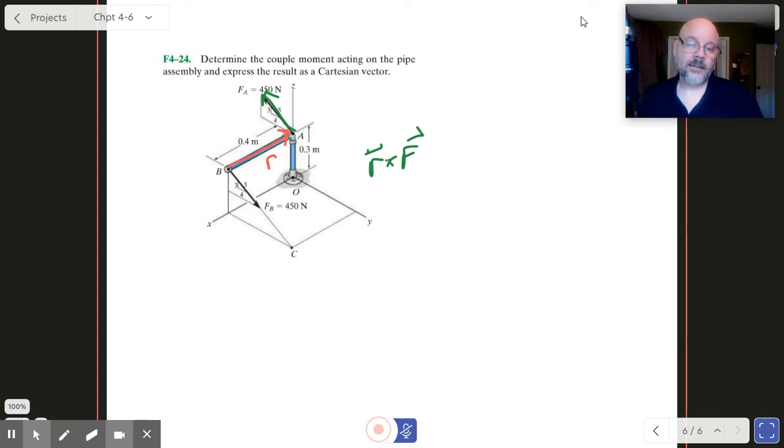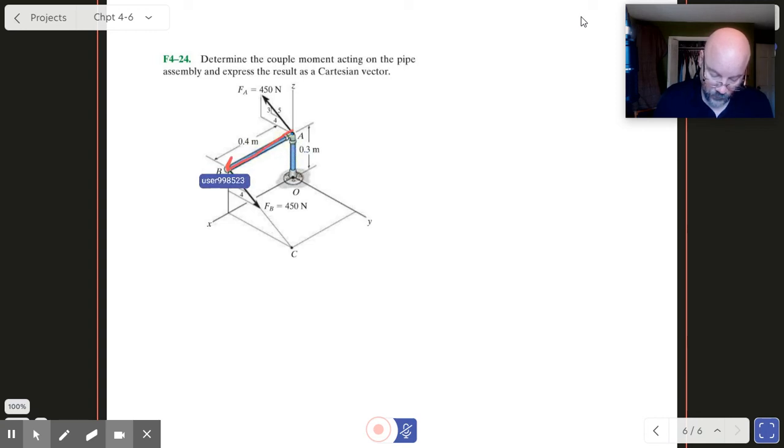All right. Or we could go the other way with it, okay? We can completely undo all of this and make R point this way. In that case, then we would use F down here just like that, okay?